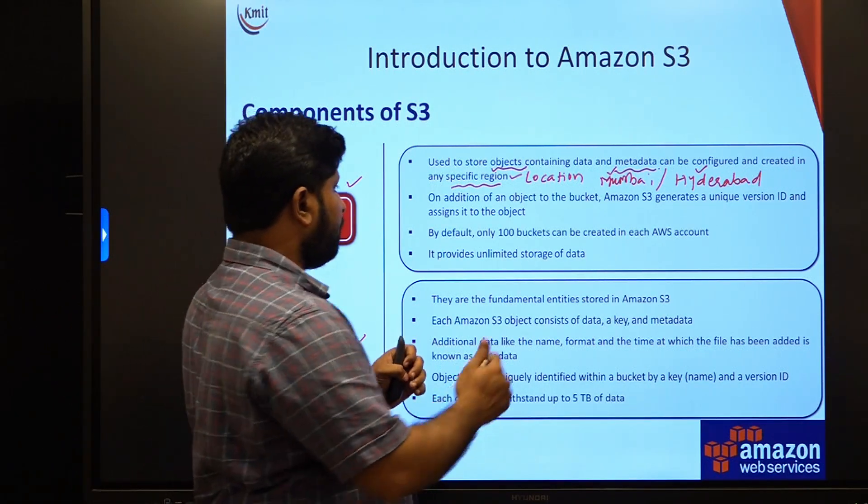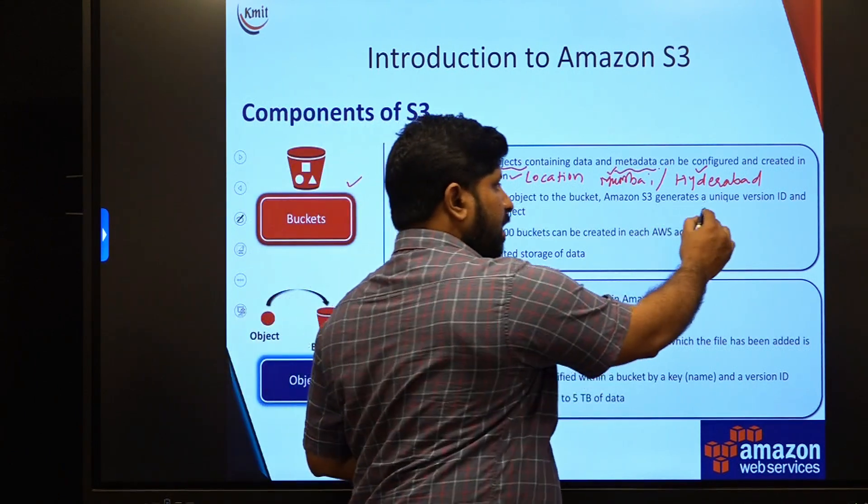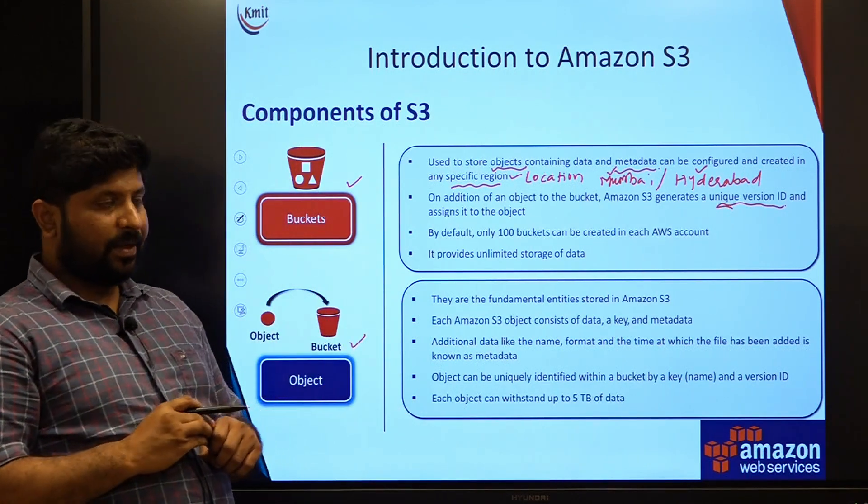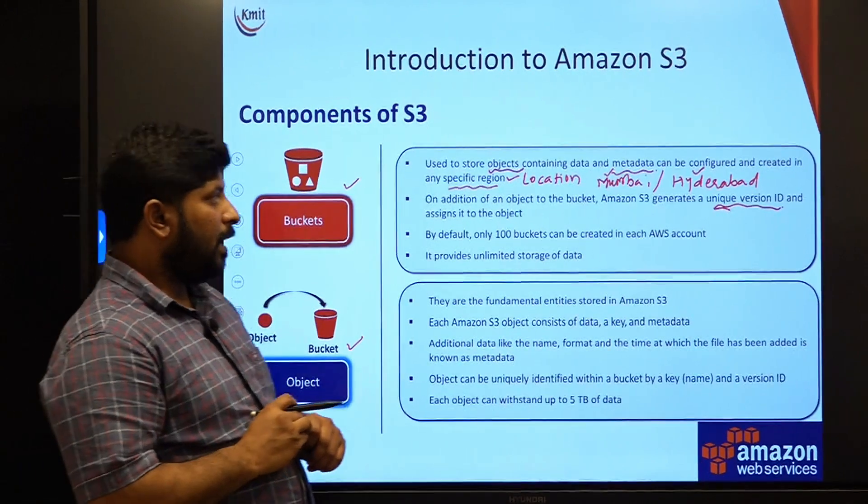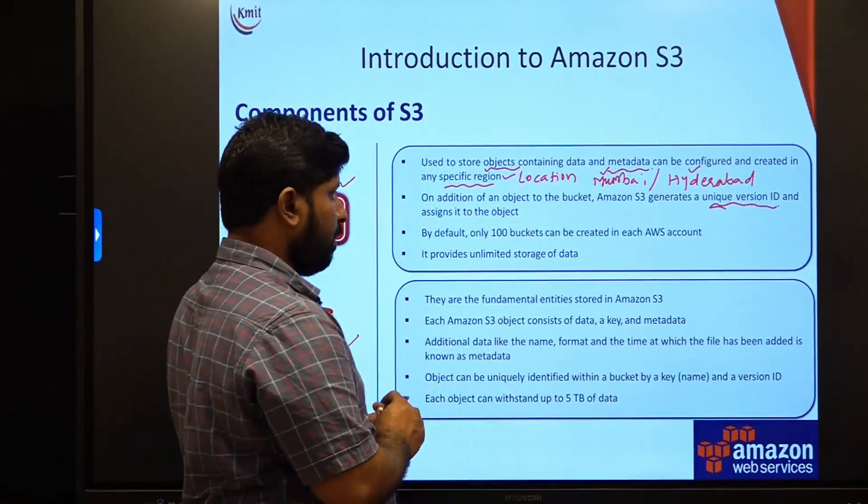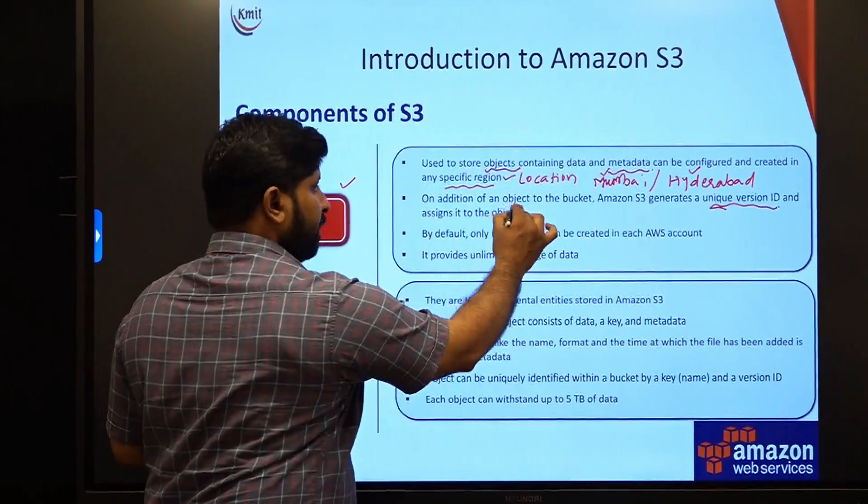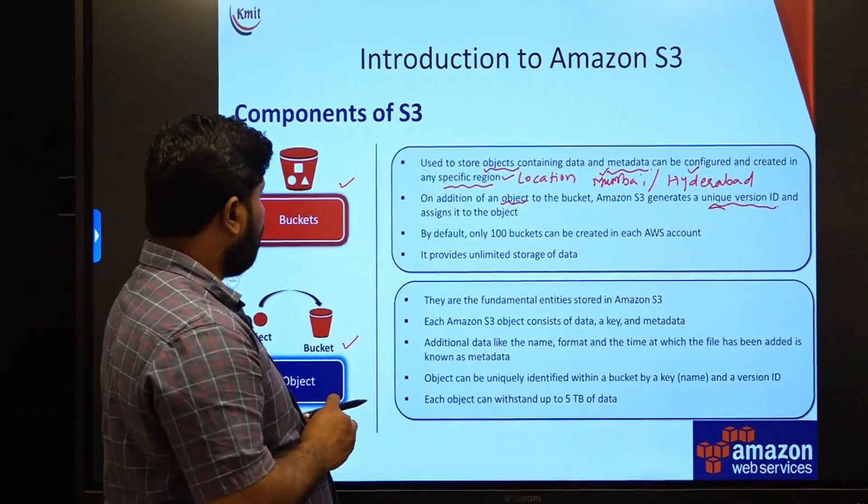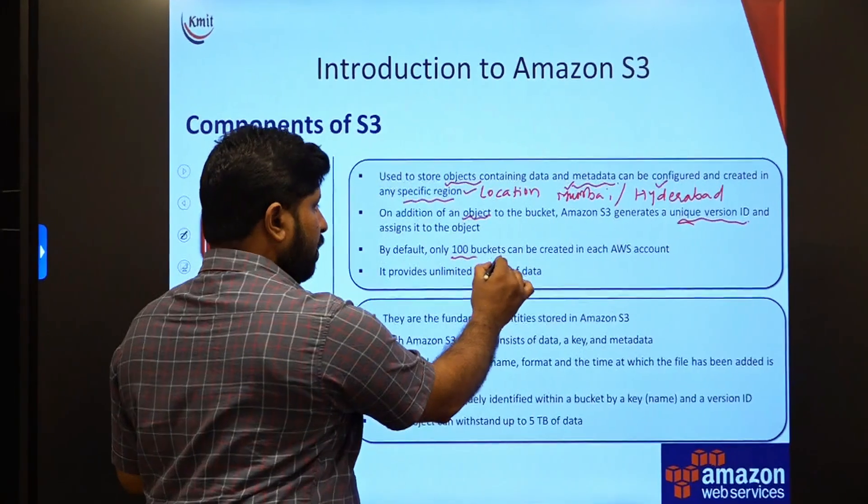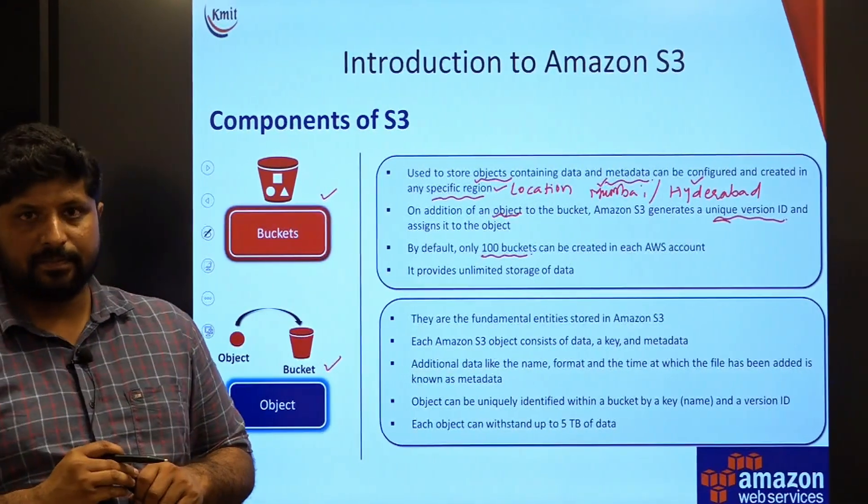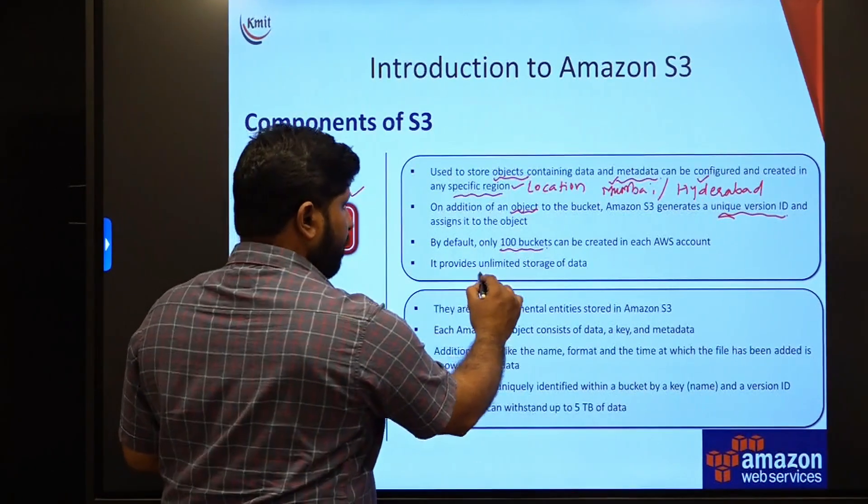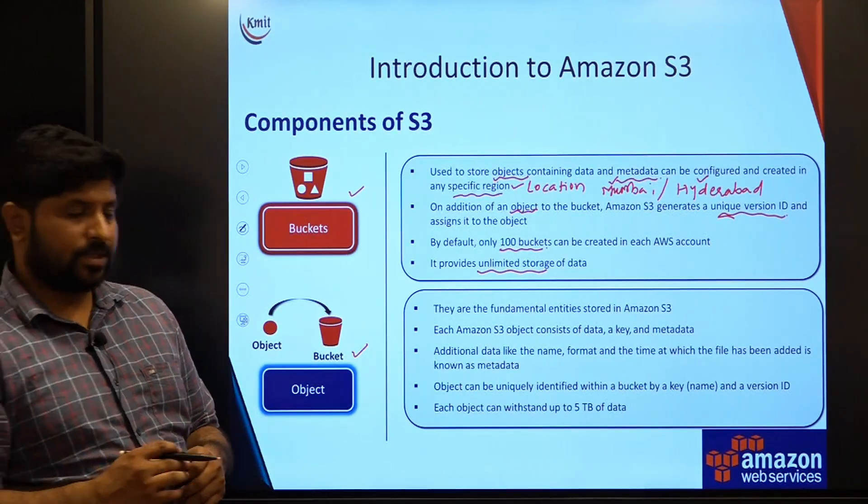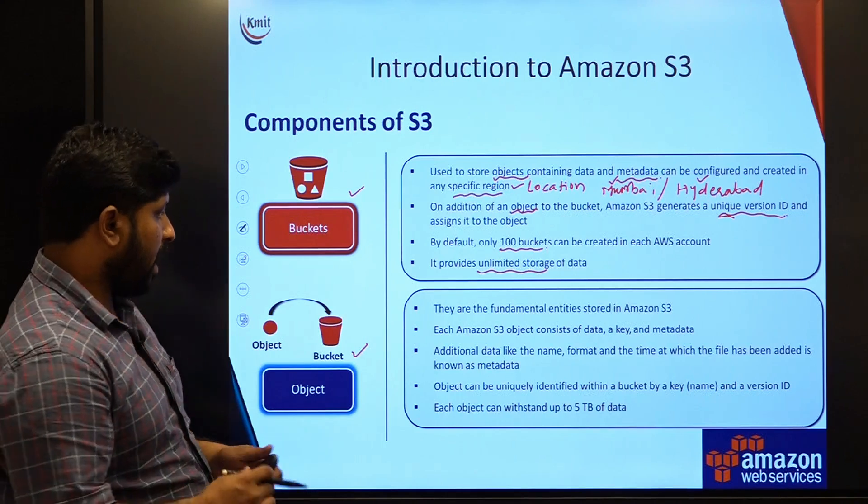At the same time, these buckets will generate a unique version ID. Versioning can be done in S3, and this versioning will be attached to each and every object with a different ID. That we are going to have a look. Then, as I said, by default, we can create 100 buckets in an account and it provides unlimited amount of storage. You can store any amount of exabytes or petabytes of data in S3.